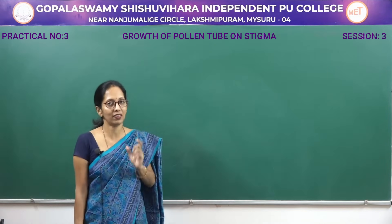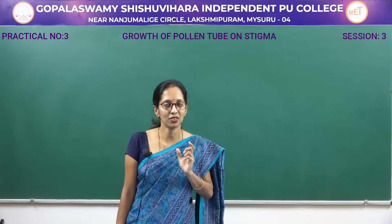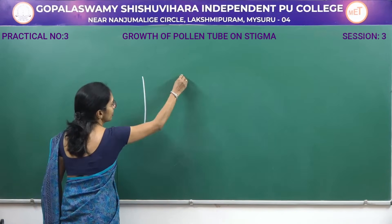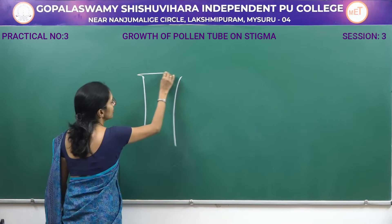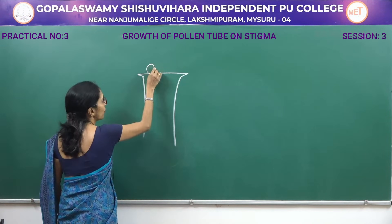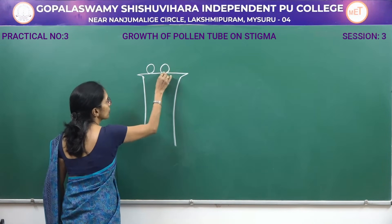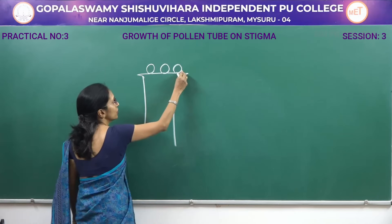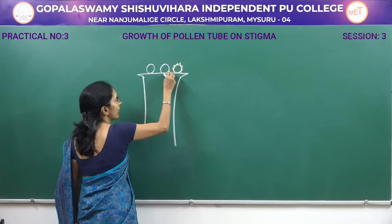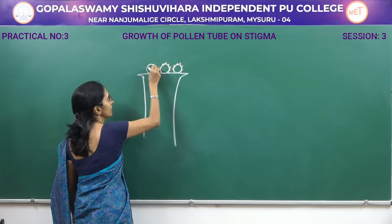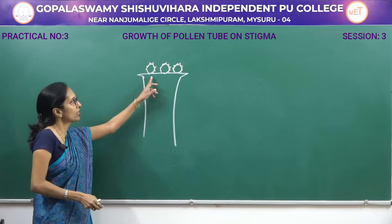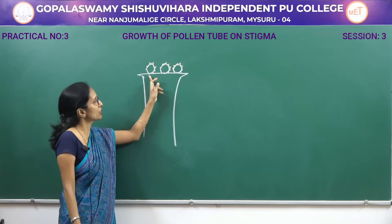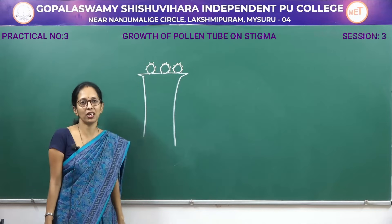Pollen grains are structures that develop inside the anthers. When the pollen grain falls on the stigmatic surface — this is the style and this is the stigma region — the pollen grain possesses two layers: outer exine and inner intine. It then absorbs water and sugar substances present in the stigmatic region.